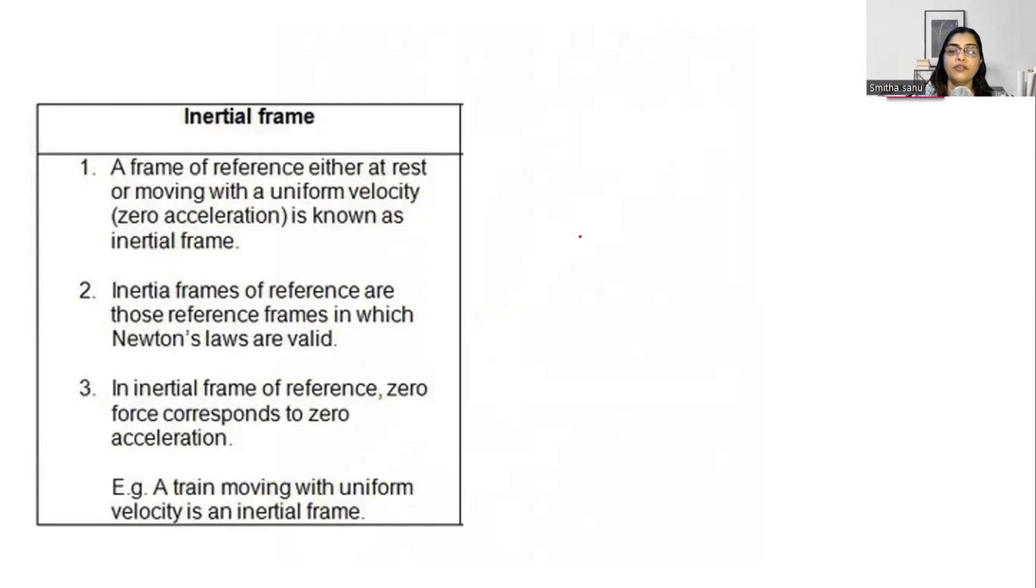There are two frames of reference. The first frame of reference is called the inertial frame of reference. As the name suggests, inertial frame of reference is that reference frame which moves at uniform velocity. Since it's uniform velocity, its net force and acceleration is 0, and it abides by Newton's laws of motion.